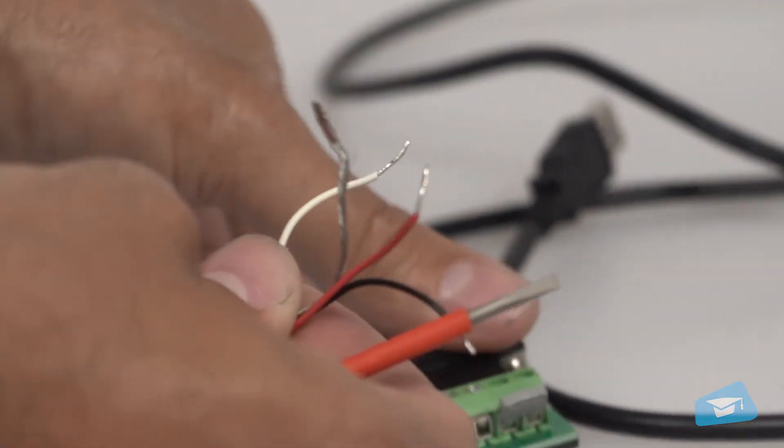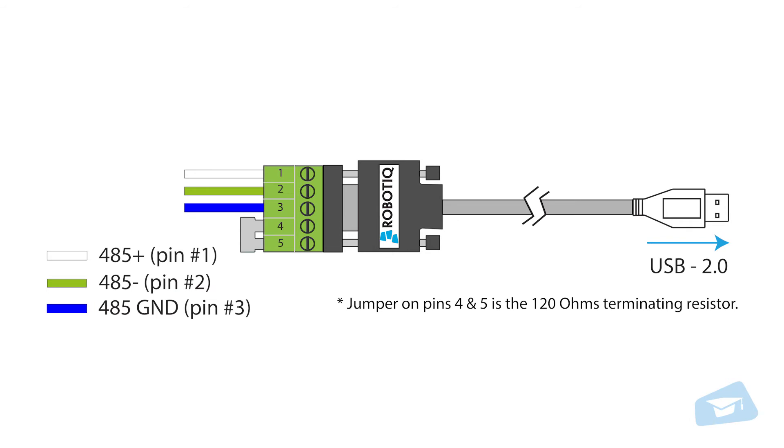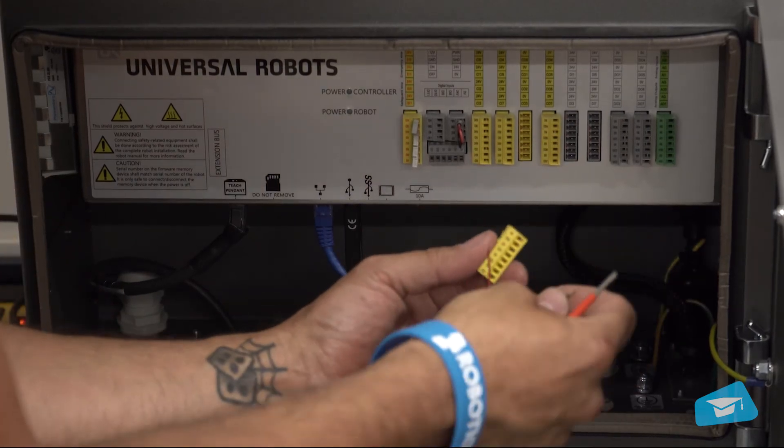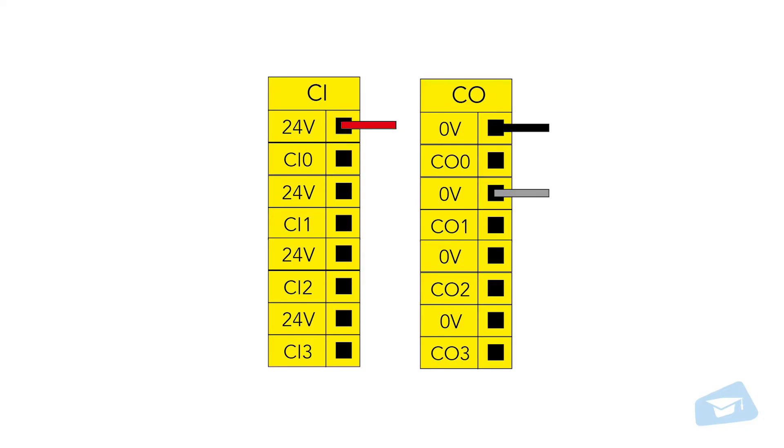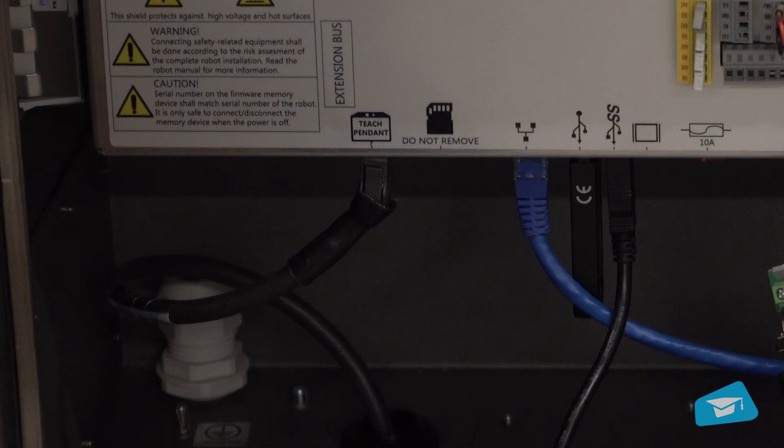Connect the wires to the USB converter as shown here. Route the cable to the robot controller. Connect the wires as shown here. Connect the USB converter to the universal robot's controller.